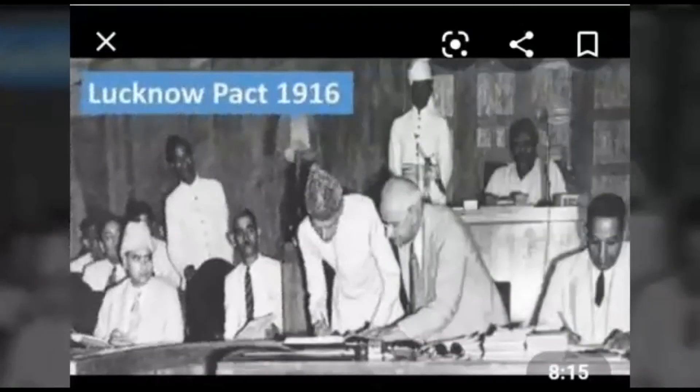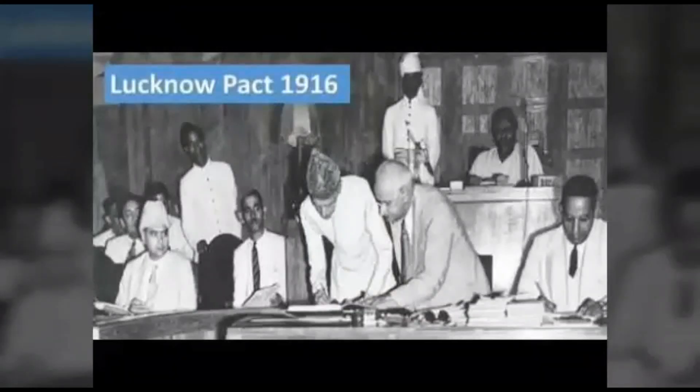Lucknow Pact: In the Lucknow session of Indian National Congress in 1916, under the leadership of Lokmanya Tilak, an attempt was made to resolve the dispute of the Indian National Congress. In the same year, there was an agreement between Indian National Congress and Muslim League, known as the Lucknow Pact. According to this pact, the Indian National Congress agreed to separate electorates for Muslims, and the Muslim League agreed to support the Indian National Congress in its work for getting political rights for India.